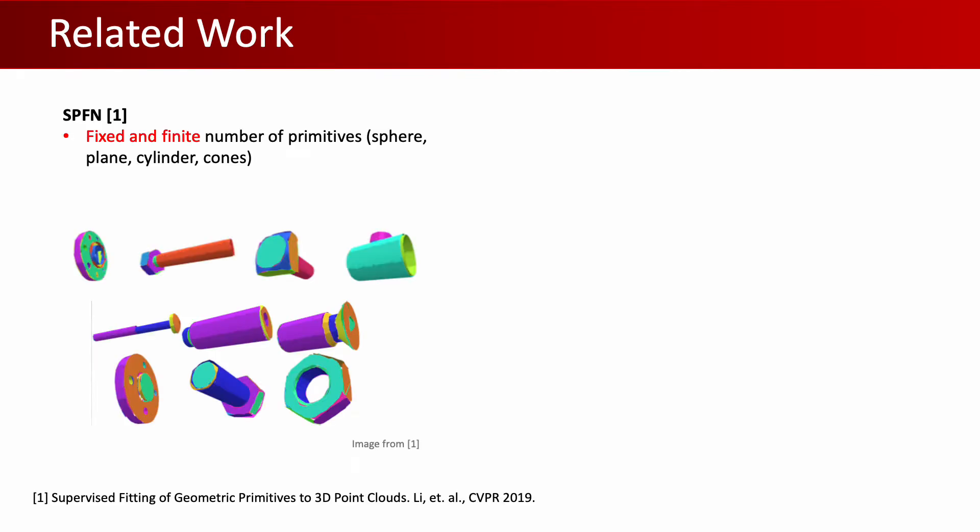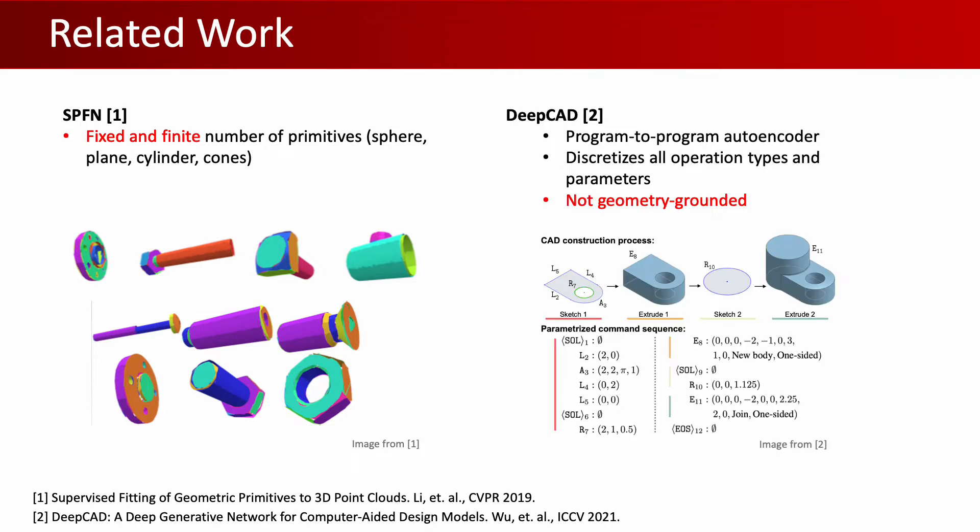Previous approaches either approach this by direct primitive fitting, which assumes a fixed and finite number of primitive types, in contrast to our extrusion cylinders which are represented by arbitrary closed loops, or via a program-to-program auto-encoder approach that is not geometry-grounded as it never sees the raw input geometry.